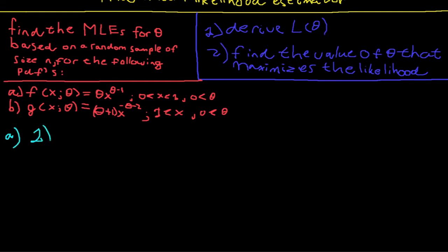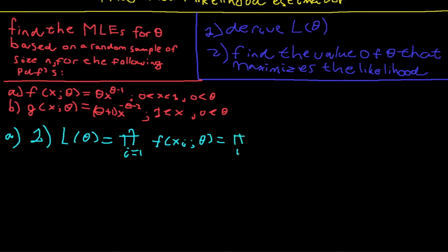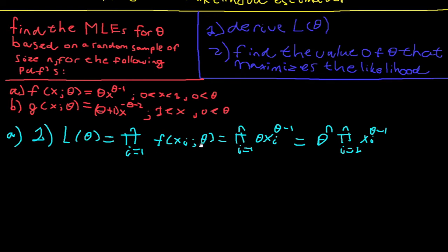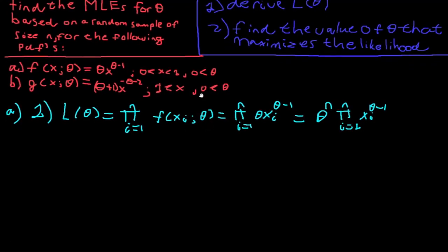Let's start with question A. The first step is to derive the likelihood function, which is defined as the product from i equals 1 to n of the individual probability density functions. In this case, that equals theta times x raised to the power theta minus 1. Since theta does not depend on x, we can pull it out of the product. This likelihood function tells us how likely it is to generate these data points for a certain value of theta, and we want to find the value of theta that maximizes that likelihood.